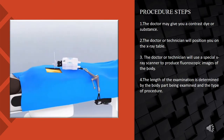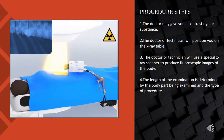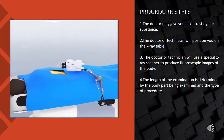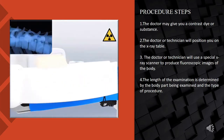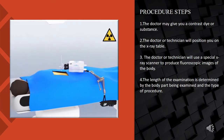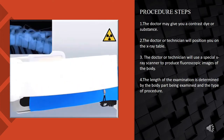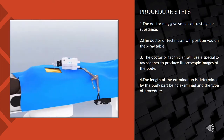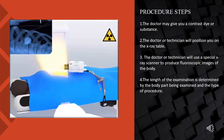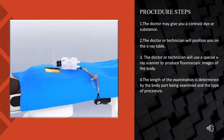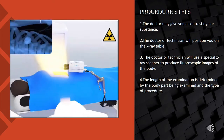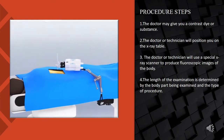These are the procedure steps. Step 1: The doctor may give you a contrast dye or substance depending on which procedure you are having done. The doctor may administer the contrast through an intravenous line, enema, or you can swallow it. The doctor uses contrast so they can get a better look. Step 2: The doctor or technician will position you on the x-ray table. If you are receiving a procedure that requires a catheter, the doctor will insert a needle into your elbow, groin, or another site.